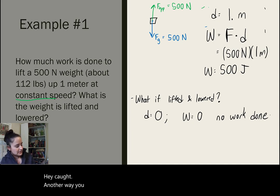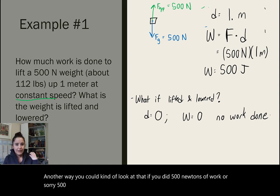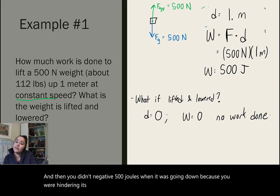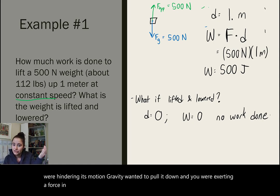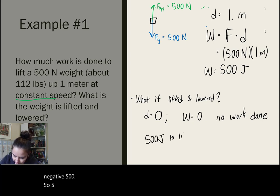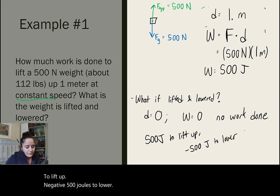Another way you could kind of look at that is you did 500 joules of work lifting it up, and then you did negative 500 joules when it was going down because you were hindering its motion. Gravity wanted to pull it down and you were exerting a force in the opposite direction of its motion. So, 500 joules to lift up, negative 500 joules to lower.